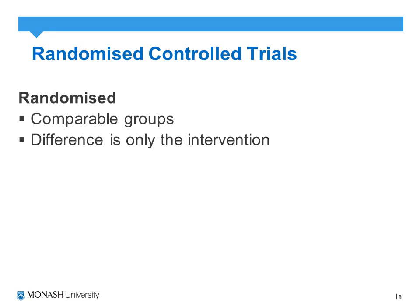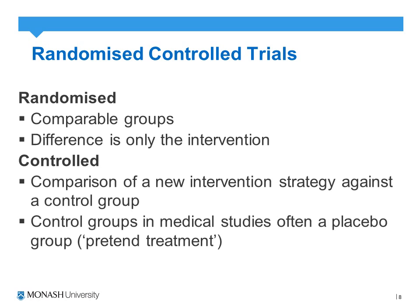During the randomization process, ideally the allocation is blinded so that the only difference between the two groups is that one receives the intervention and the other does not — receiving a placebo or, in some cases, no treatment whatsoever.